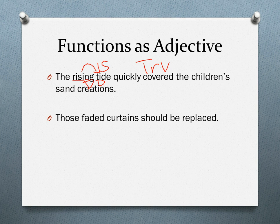Let's look at the second sentence. Same sentence pattern: subject, verb 'should be replaced,' no direct object — that makes it intransitive. So there's only one noun that a participle can modify. 'Fade' is a verb, so 'faded' describes 'curtains' — that's our participle.